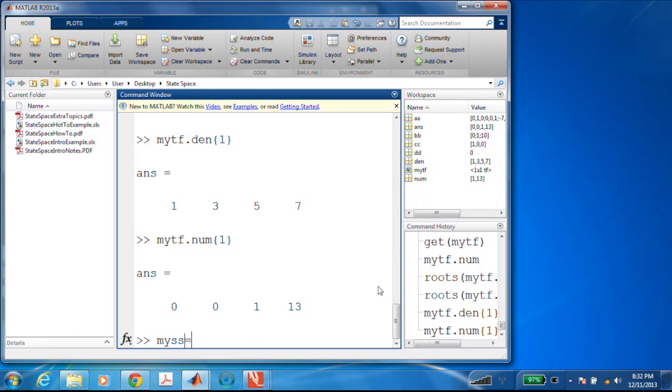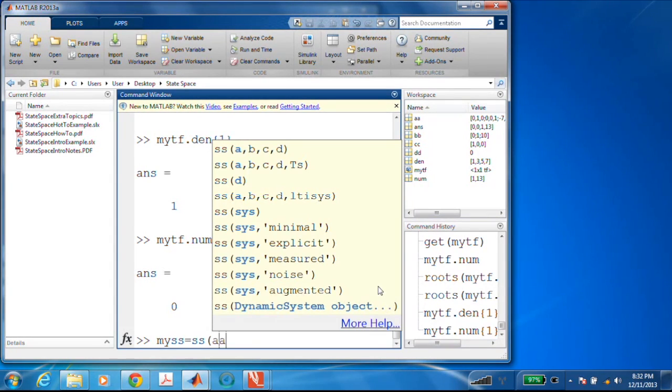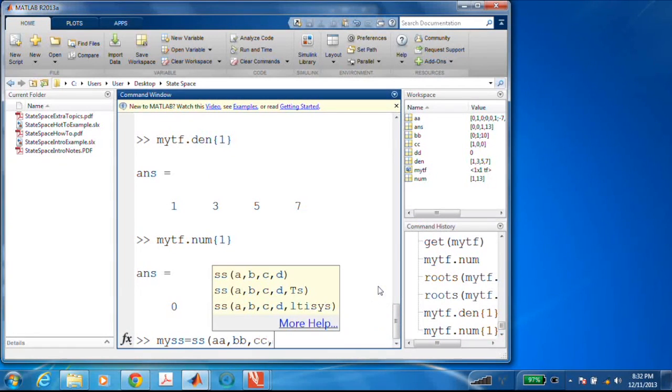We could do the same thing for the state space realization. I could go, my SS is equal to, I'll use the SS command for a, a, b, b, c, c, and d, d.